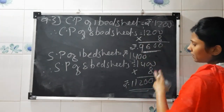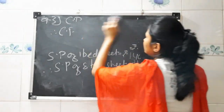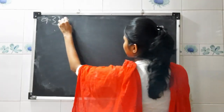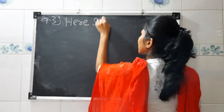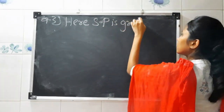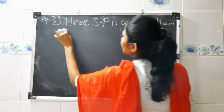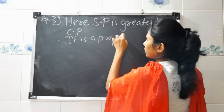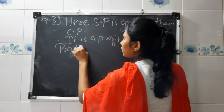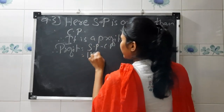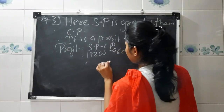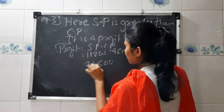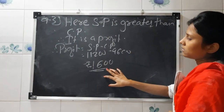Cost price is 9600 and selling price is 11200. Selling price is greater than cost price, so it is a profit. Since SP is greater than CP, profit equals selling price minus cost price, that is 11200 minus 9600, which gives rupees 1600. So the profit is rupees 1600.